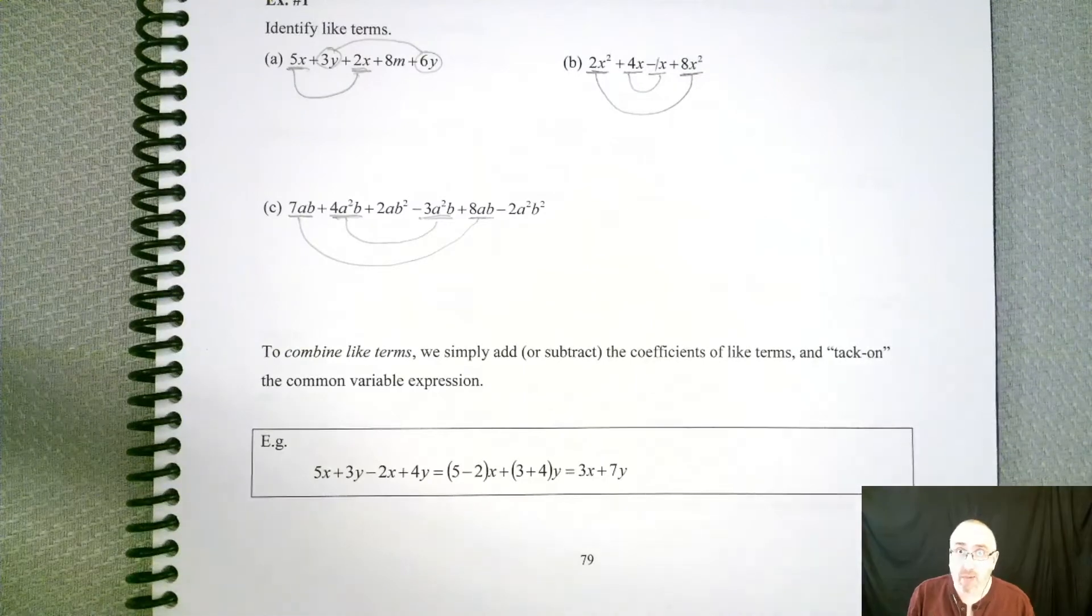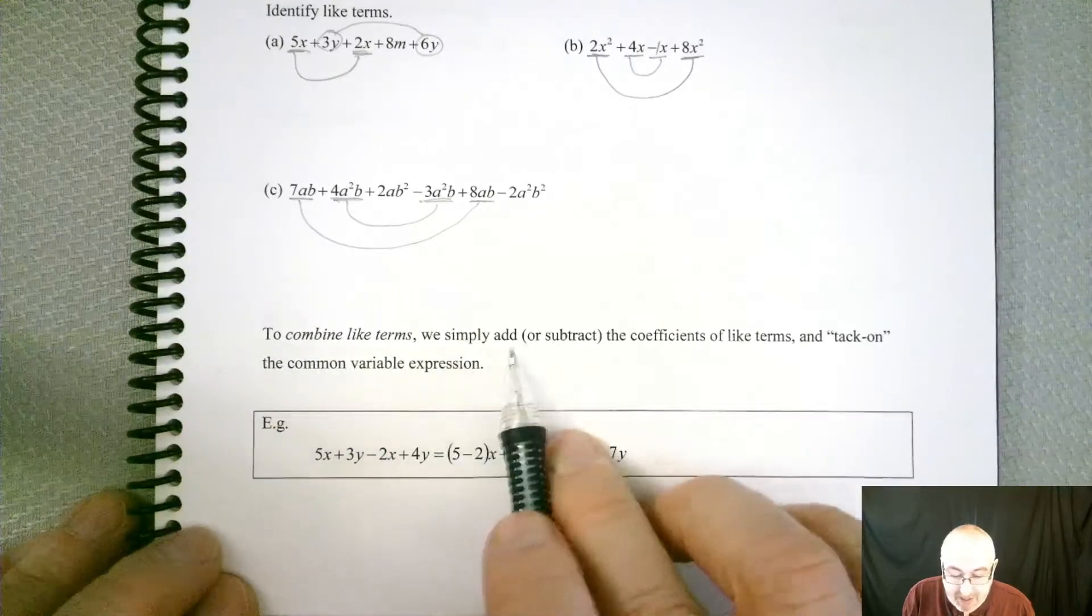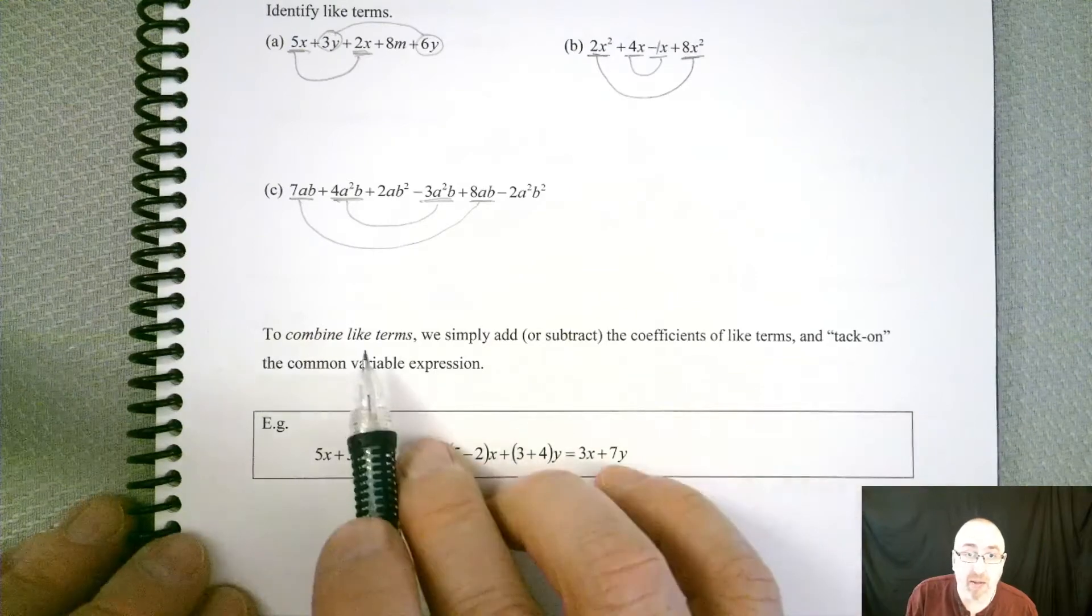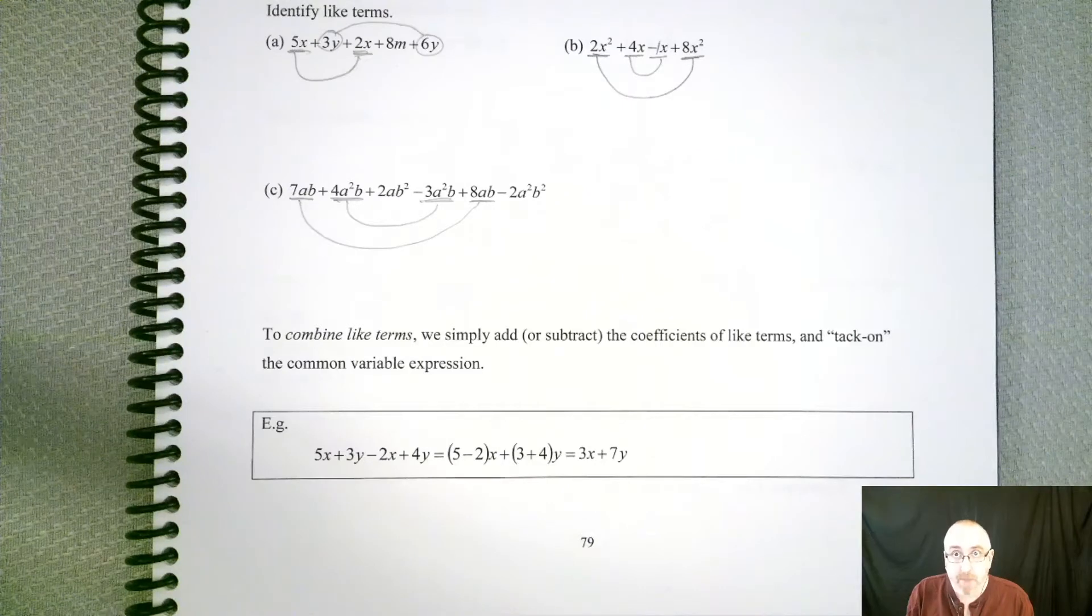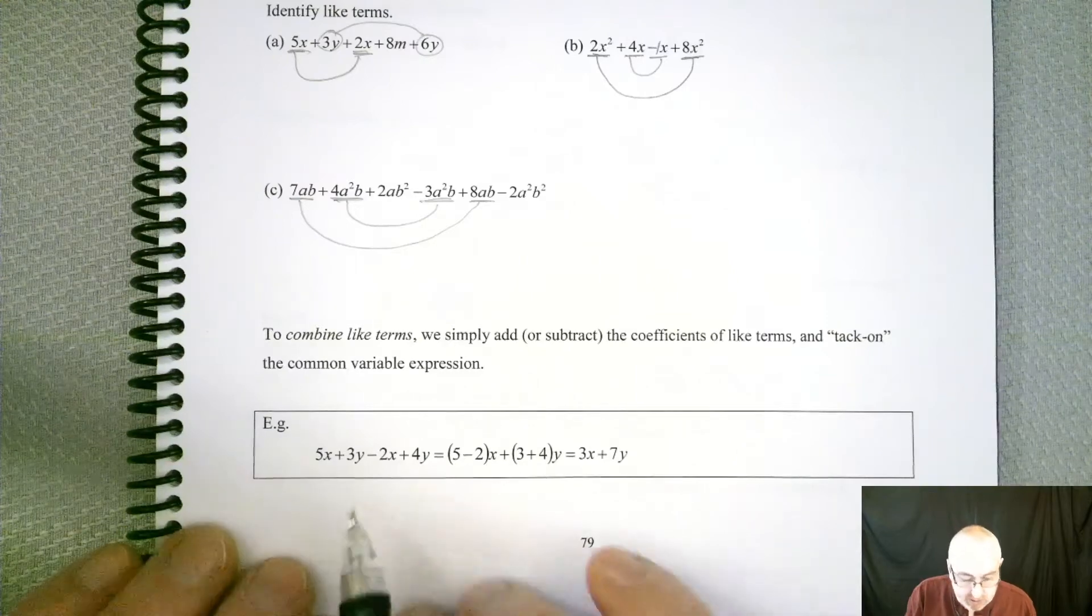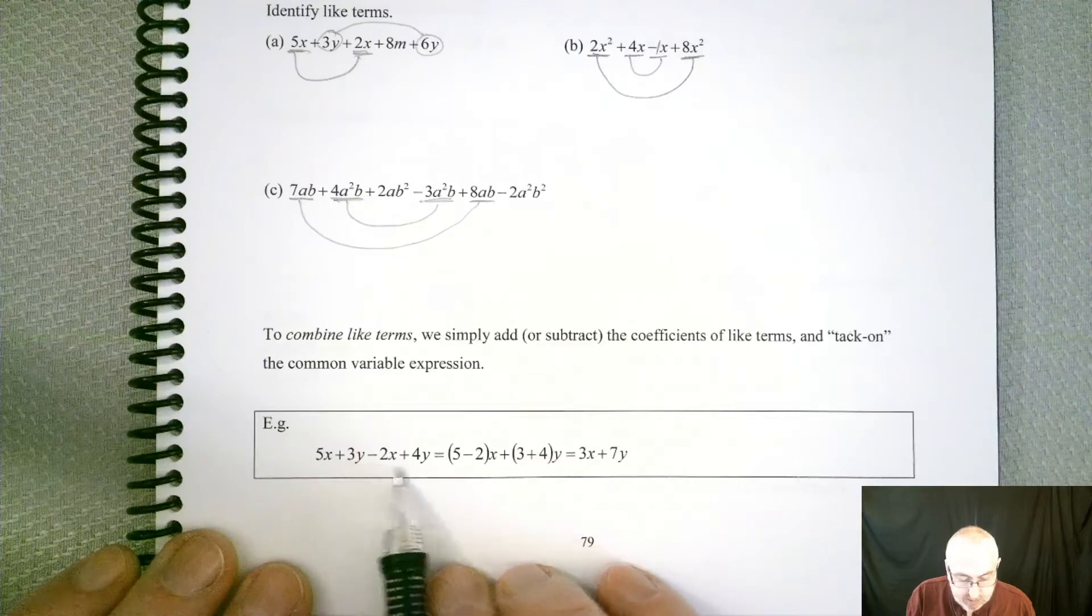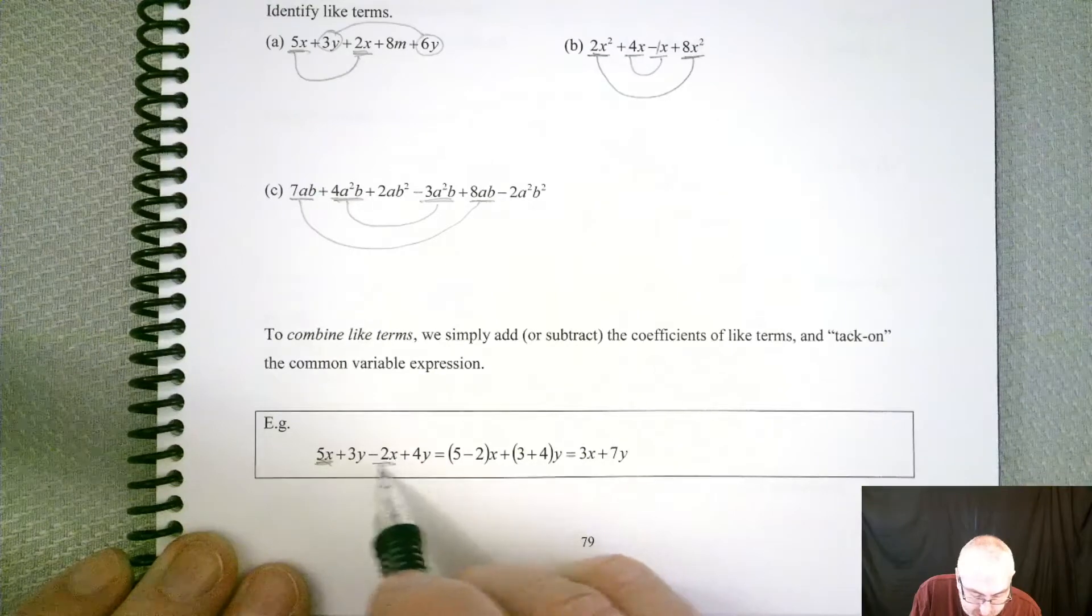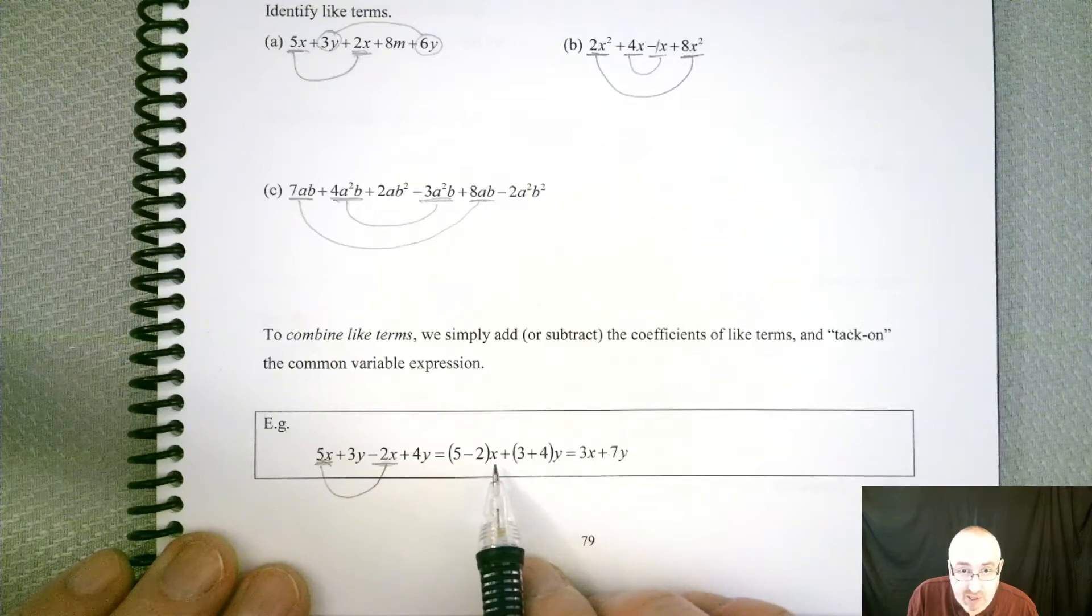Now, how do we take care of those coefficients? Well, I'm glad you asked. To combine like terms, we simply add or subtract the coefficients of like terms, and then tack on the common variable expression. So we're not doing anything with the variables at all. All we do is make note of what it is, and we keep it the same. So looking at this example here, we have 5x plus 3y minus 2x plus 4y. So we can see that the 5x and the minus 2x go together. So we can see there's the 5 minus 2. The x part doesn't change.